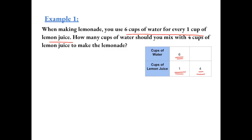For 4 cups of lemon juice, how many cups of water do we need? To get from 1 cup of lemon juice to 4 cups of lemon juice, that's 4 times the amount. So to make sure our ratios are proportional or equivalent, we need to do the same thing to the cups of water. 6 cups of water multiplied by 4 gives us 24 cups of water. So we need 24 cups of water per 4 cups of lemon juice.